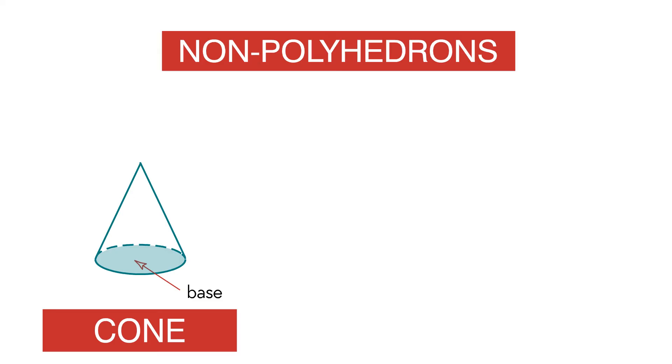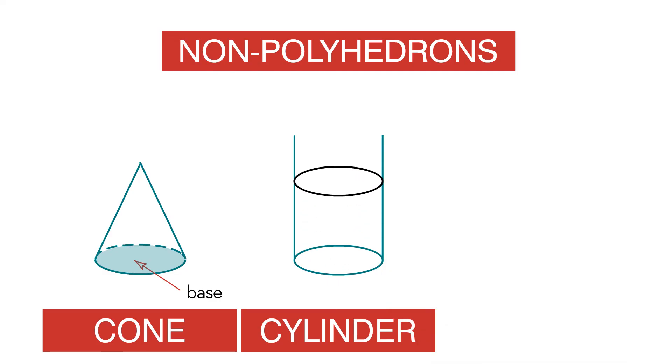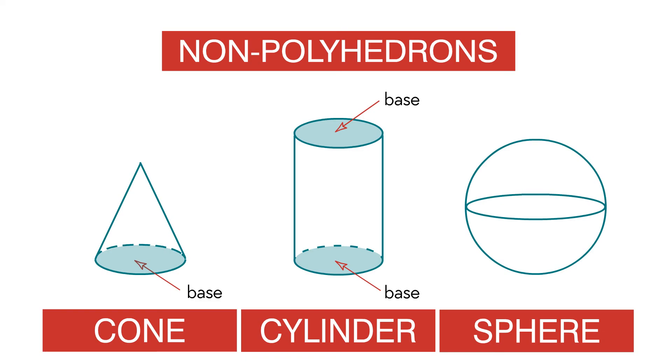Another example is the cylinder. A cylinder has two congruent circular bases and one curved surface. A third example is the sphere. A sphere has no bases and one curved surface.